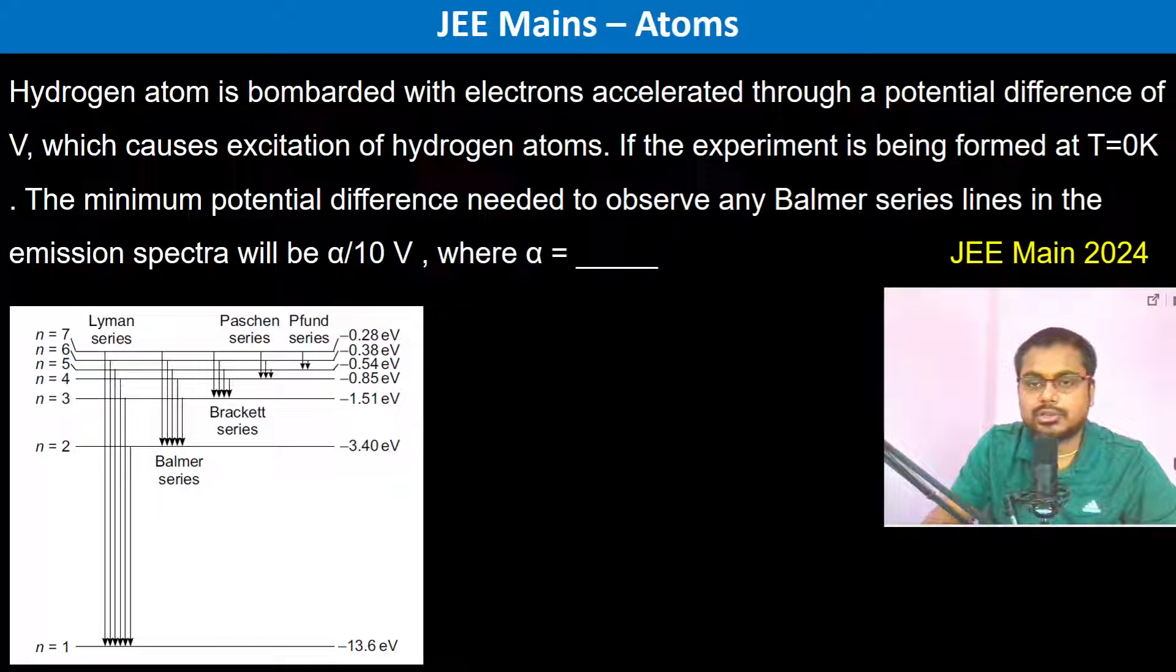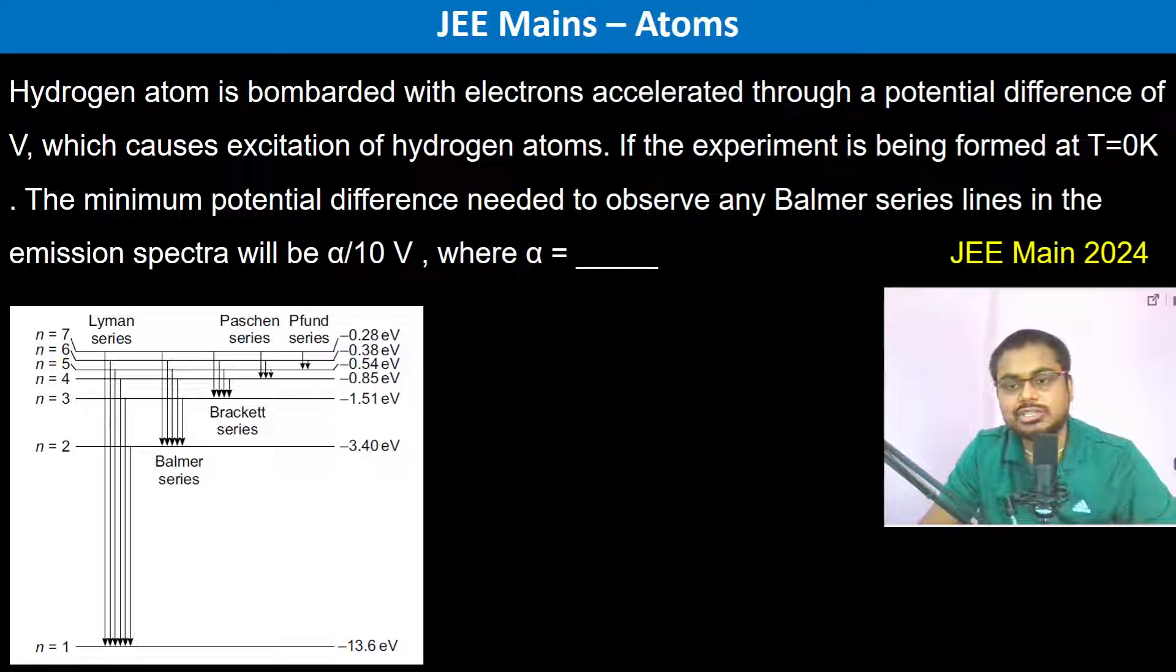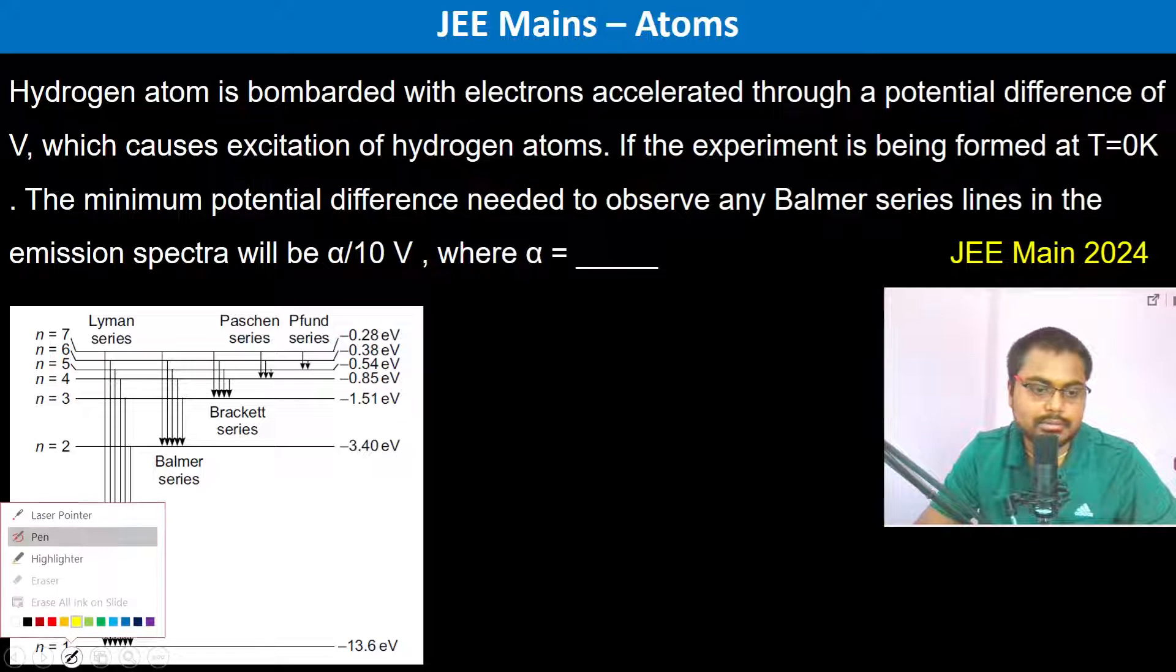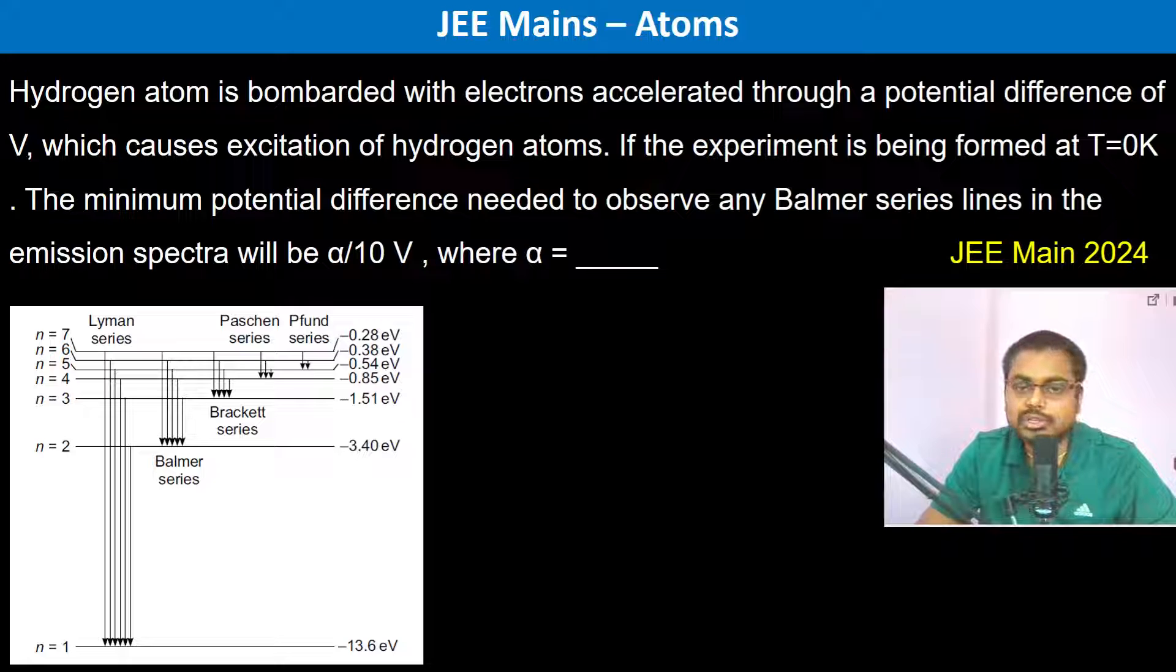A hydrogen atom is bombarded with electrons accelerated through a potential difference of V, which causes excitation of hydrogen atoms. If the experiment is being performed at zero kelvin, then the minimum potential difference needed to observe any Balmer series line in the emission spectra...